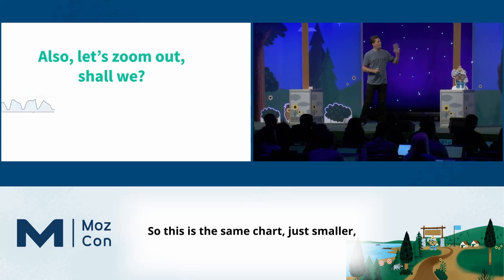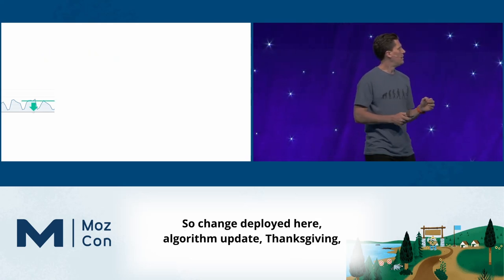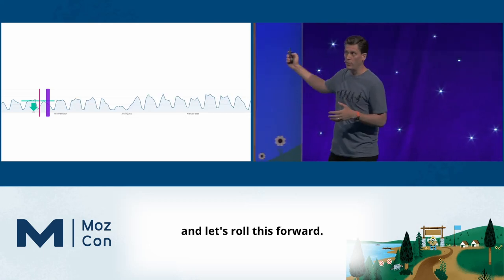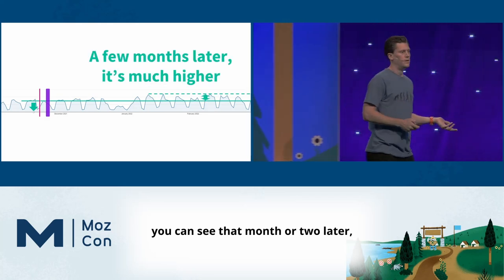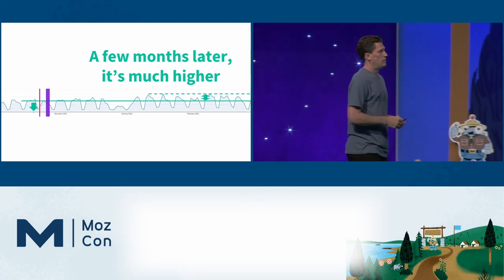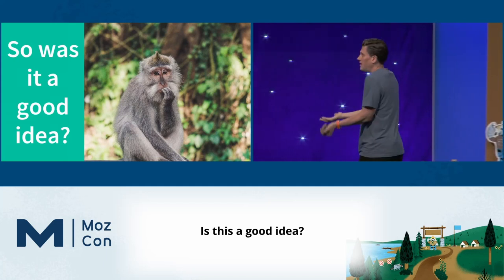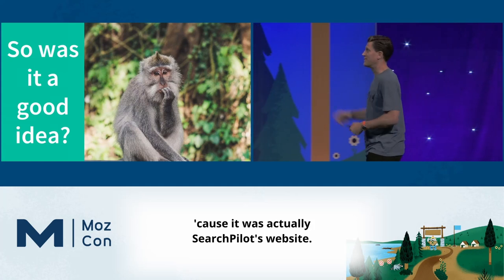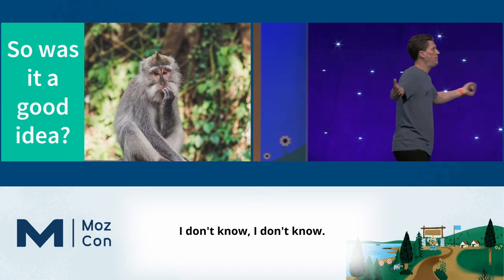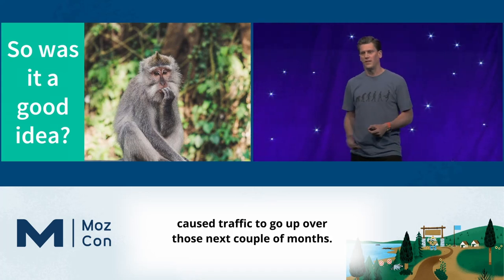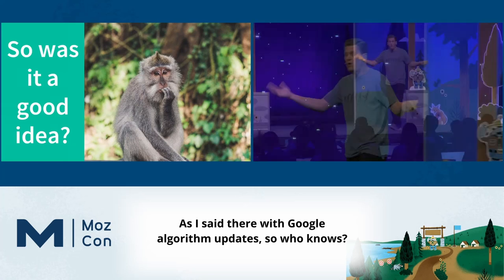Let's zoom out. Same chart, just smaller — change deployed here, algorithm update, Thanksgiving. Rolling forward, a month or two later, traffic is strongly higher. I don't even want to punchline this — I'm just confused. Is this a good idea? I don't know. It was actually SearchPilot's website. Maybe other things we did caused traffic to go up — we published other content, got some other links, there were Google algorithm updates. All these things confound the data.